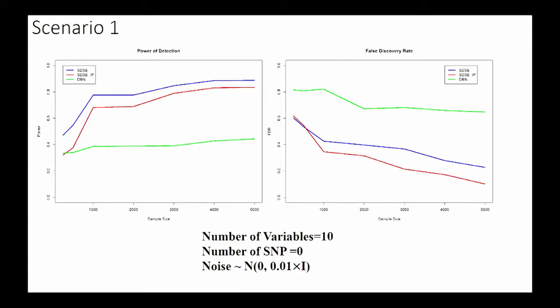In the first scenario, we choose ten variables and we set the number of SNPs to zero. From this curve, we can see that the sparse dynamic structure equation model has very high power. The SDSE with integer programming has a little bit lower power, but it can achieve very low false positive rate, about 15%.